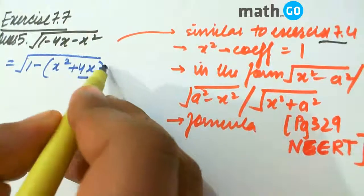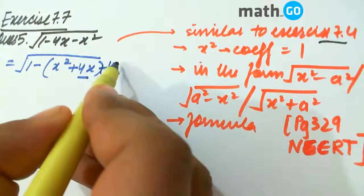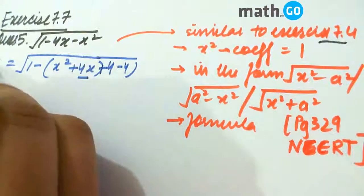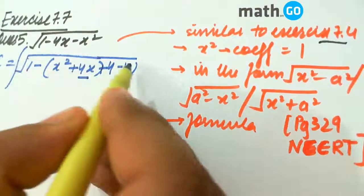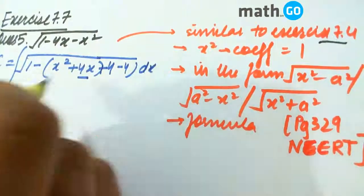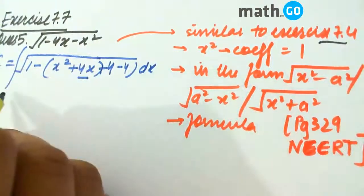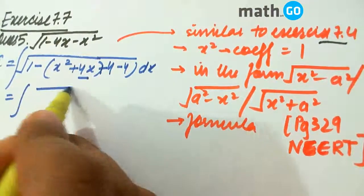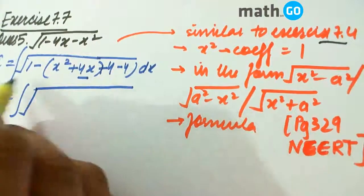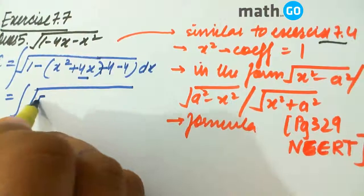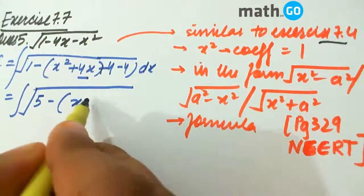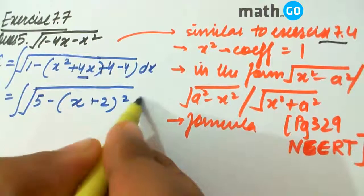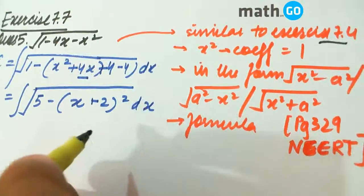So we add plus 4 and subtract minus 4. This equals y, and further we get, when we take this out, we get 5 minus (x + 2) whole squared dx.